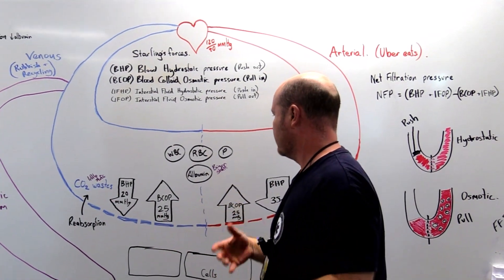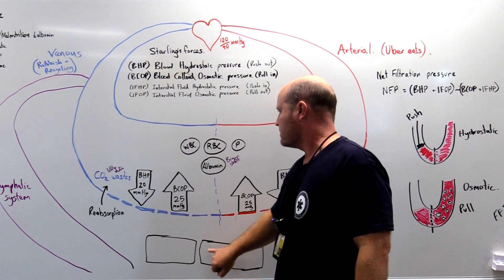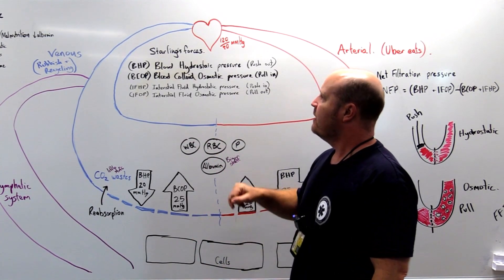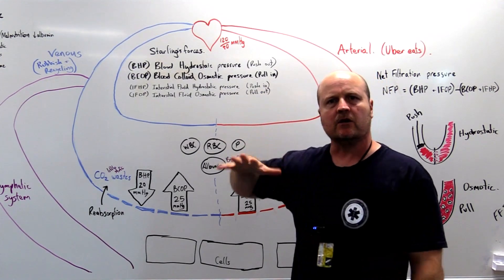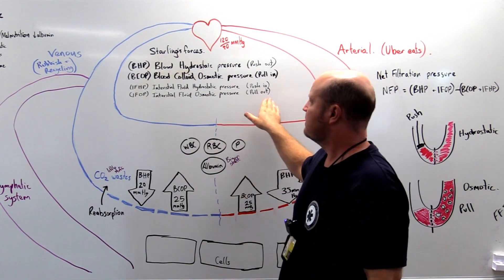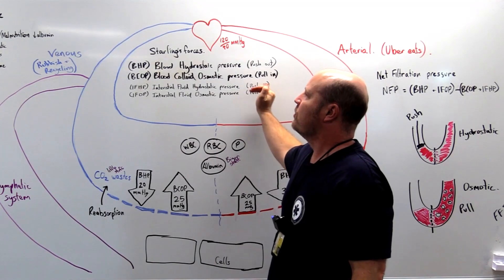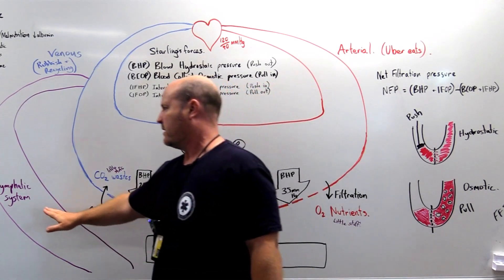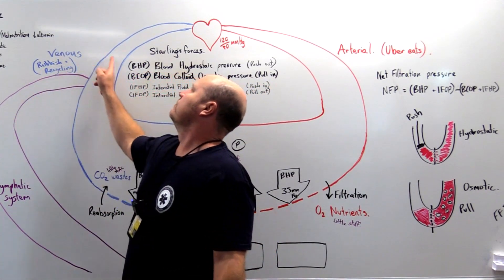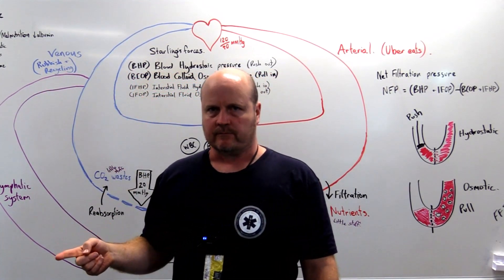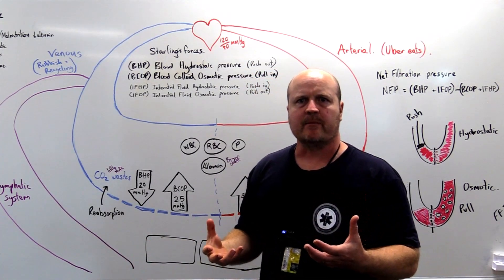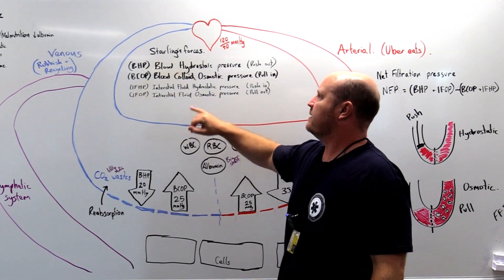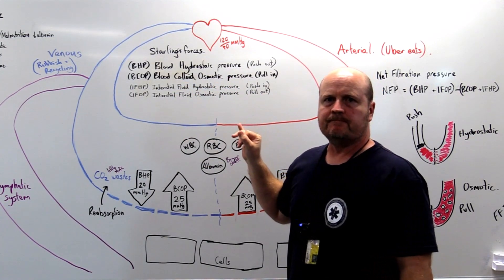The interstitial fluid is the fluid that's outside of the cells and outside of our capillaries. But this is kind of inconsequential because most of the proteins or the fluid that gets left in that interstitial space gets mopped up by the lymphatic system and then returned into our venous system. So mostly we can just think of our blood hydrostatic and our blood osmotic pressures.